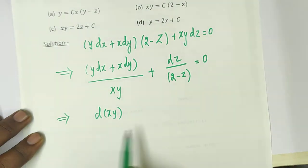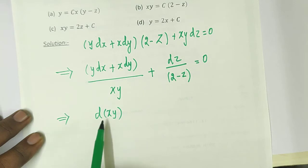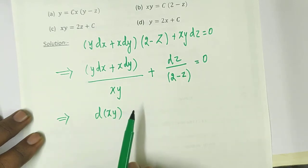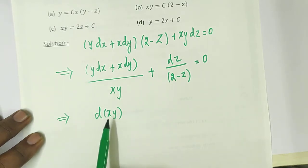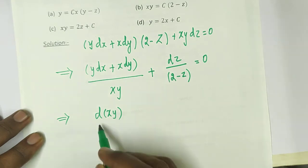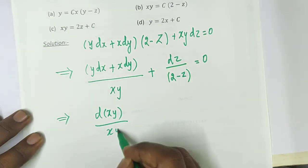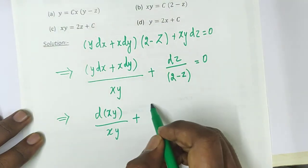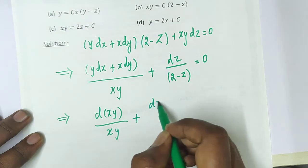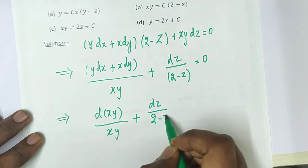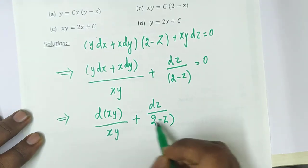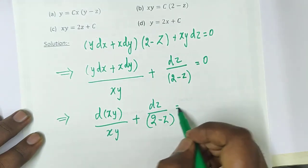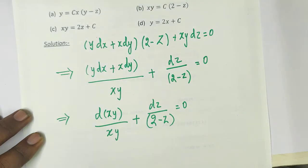We recognize that d(xy) by differentiating using the product rule gives x·dy plus y·dx. So we can write the equation as d(xy) divided by xy plus dz divided by (2 minus z) equal to 0.